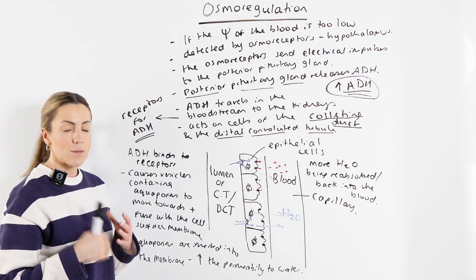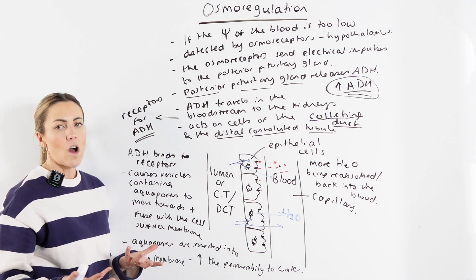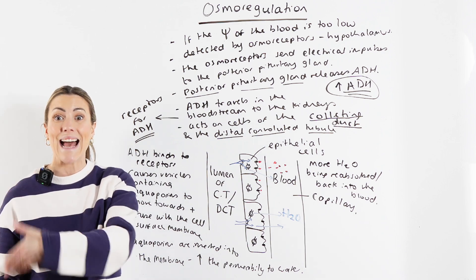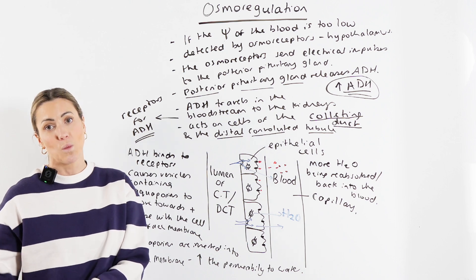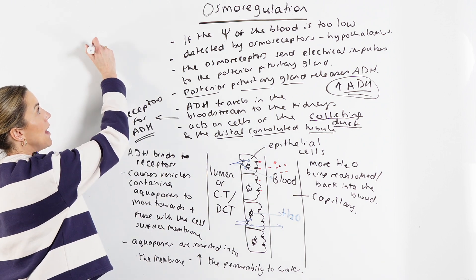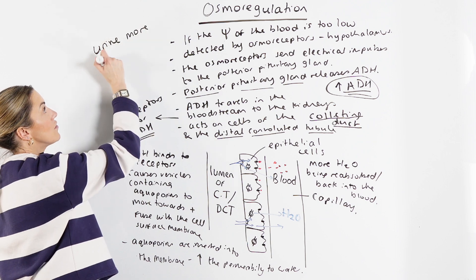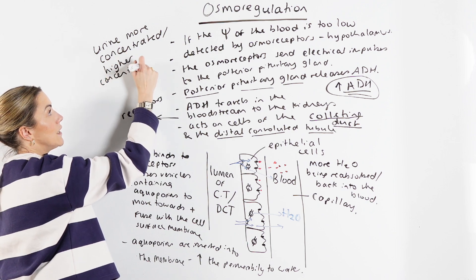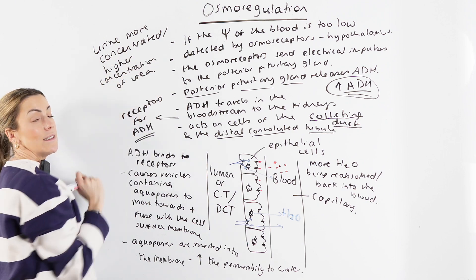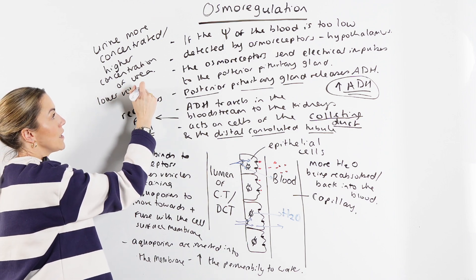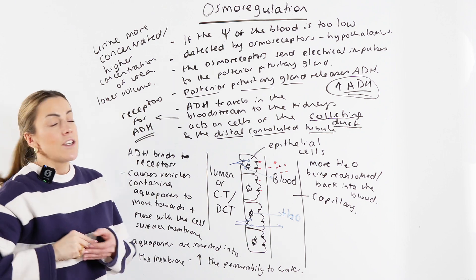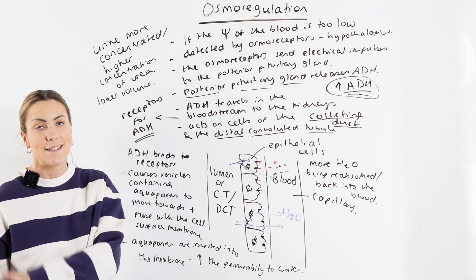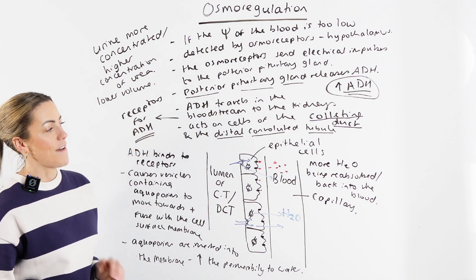The only other thing we need to talk about is the effect on the urine, which is common sense. If you're reabsorbing more water back into your blood, your urine will contain less water — you're going to lose less water. So your urine would be more concentrated, it would have a higher concentration of urea because there's less water in the urine, and it would also have a lower volume. You'd be urinating less frequently, producing a lower volume of urine, and your urine would look darker because it's more concentrated or less dilute. Make sure you can get all the way through to how it actually affects the urine.